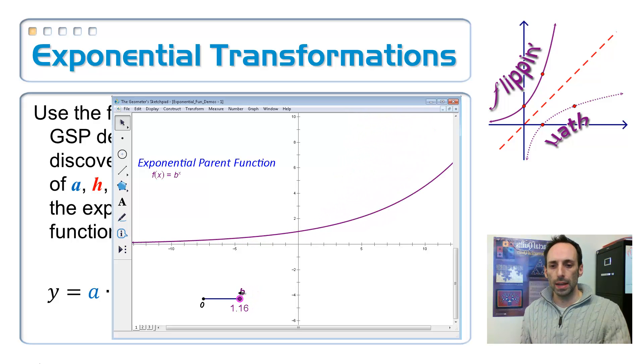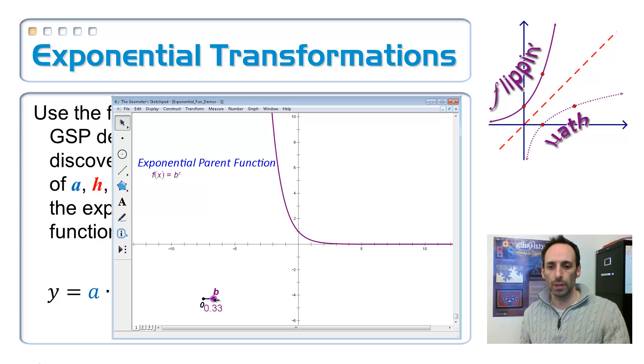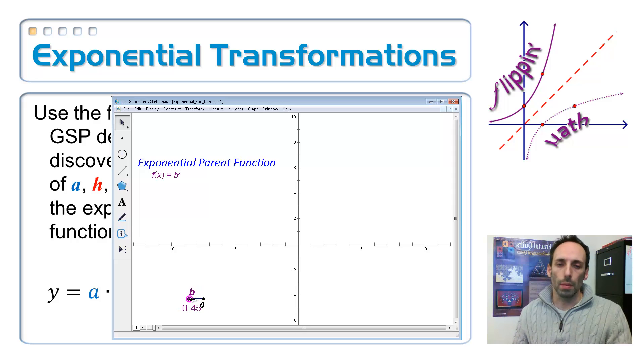If I make it so that it is between 0 and 1, now it switches from being an exponential growth function to being a decay function. The closer to 0, the steeper it gets over there on the left-hand side. And then watch what happens whenever I make it negative. Nothing, because the B can't be negative. It always has to be bigger than 0.